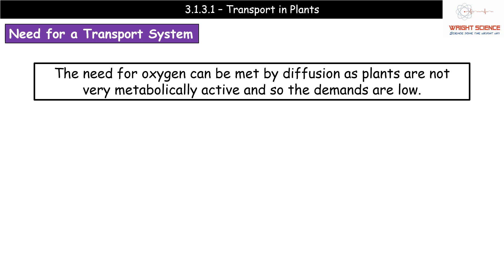In terms of oxygen, we don't mention it as requiring a specialist transport system because plants aren't overly metabolically active. They don't move around, so they don't have high demands for ATP. Because they're less metabolically active than animals, they have lower demands for oxygen, and diffusion is fast enough to meet those demands.